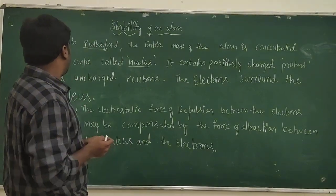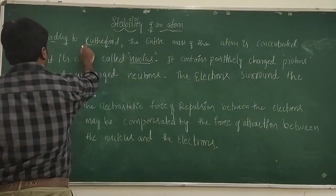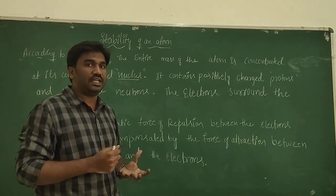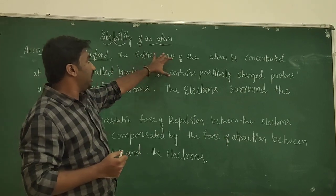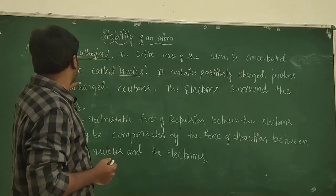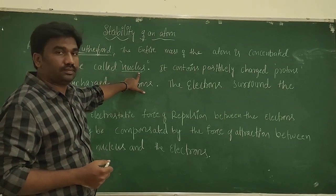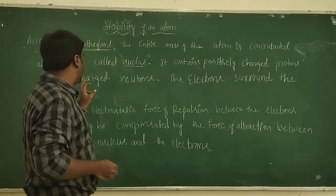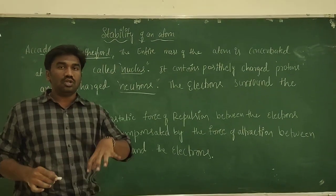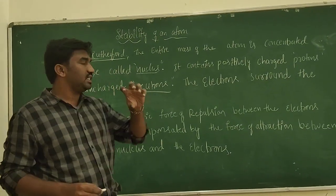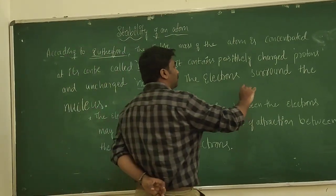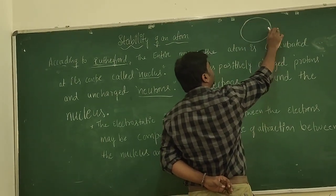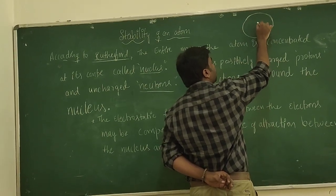In the 18th century, Rutherford was the first scientist to give an idea about the atom. According to him, the entire mass of the atom is concentrated at its center called the nucleus, and it contains positively charged protons and uncharged neutrons.